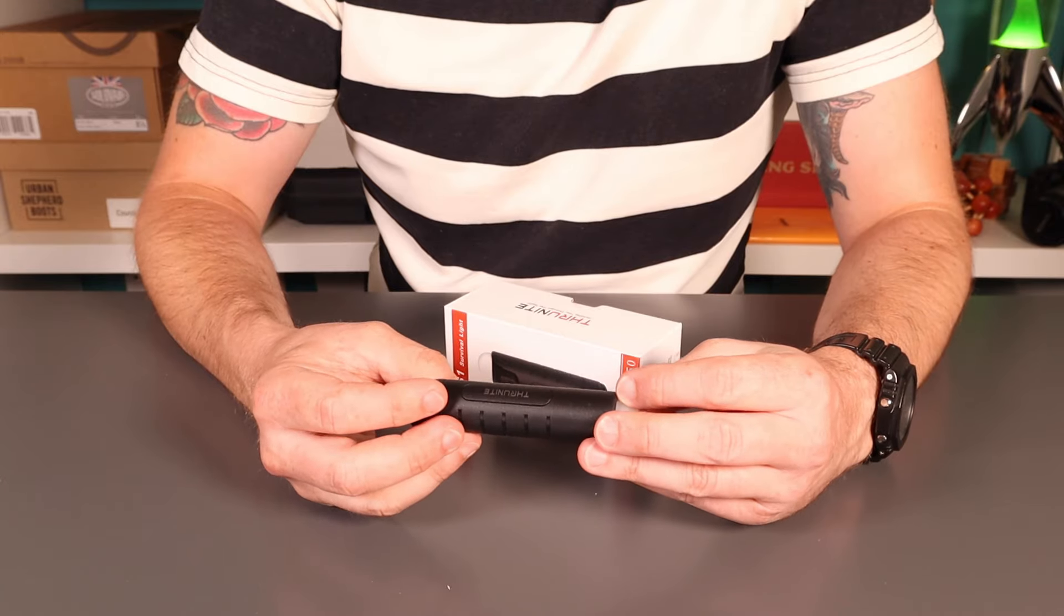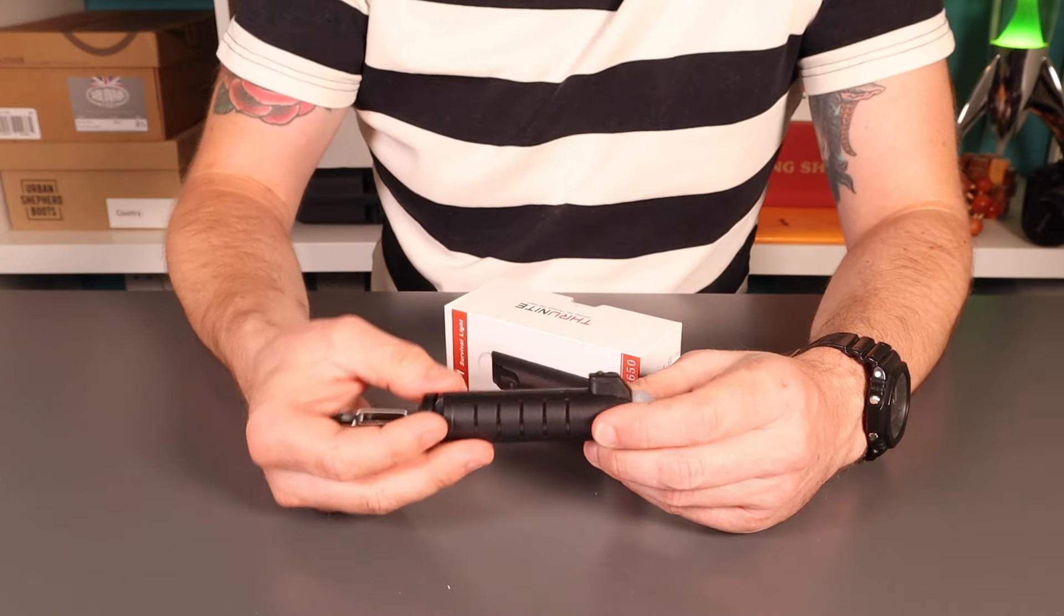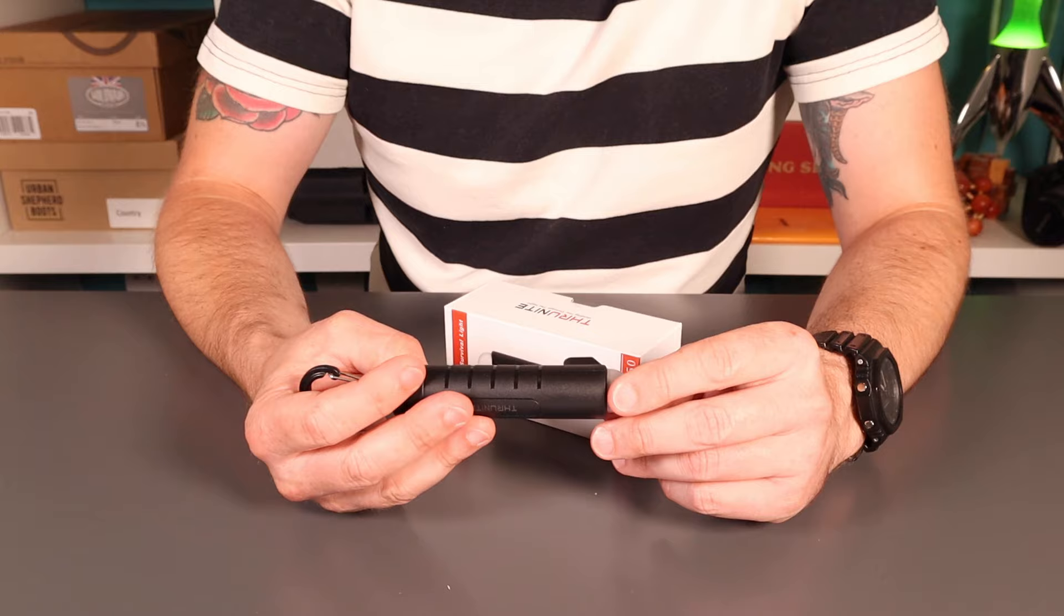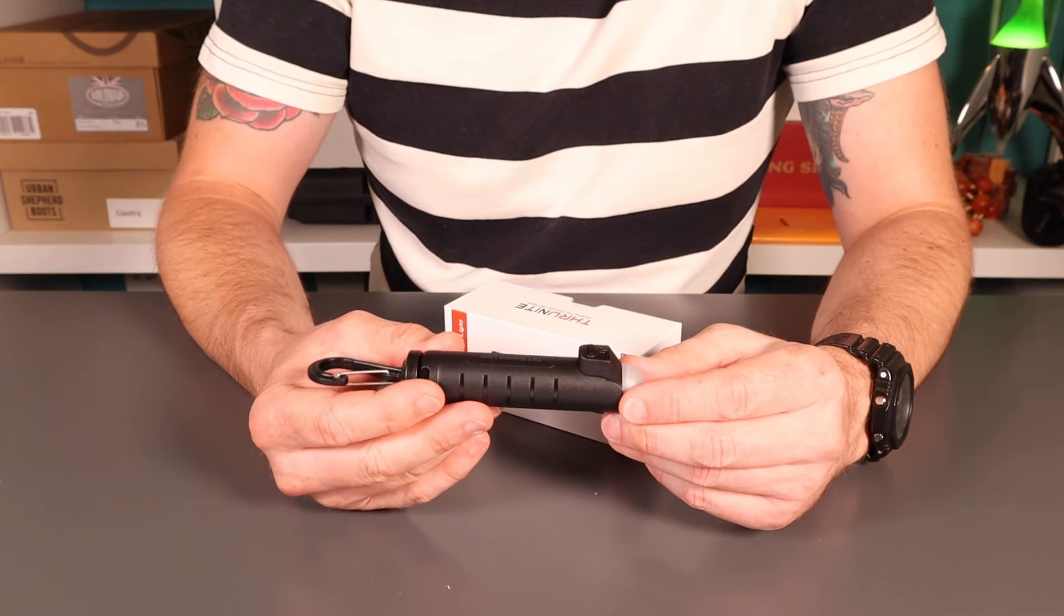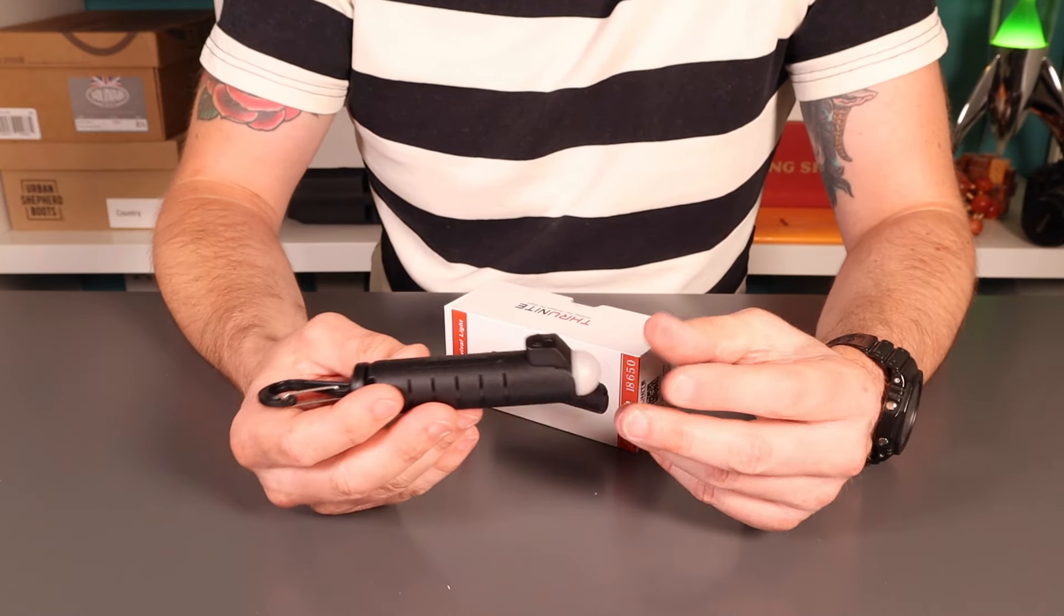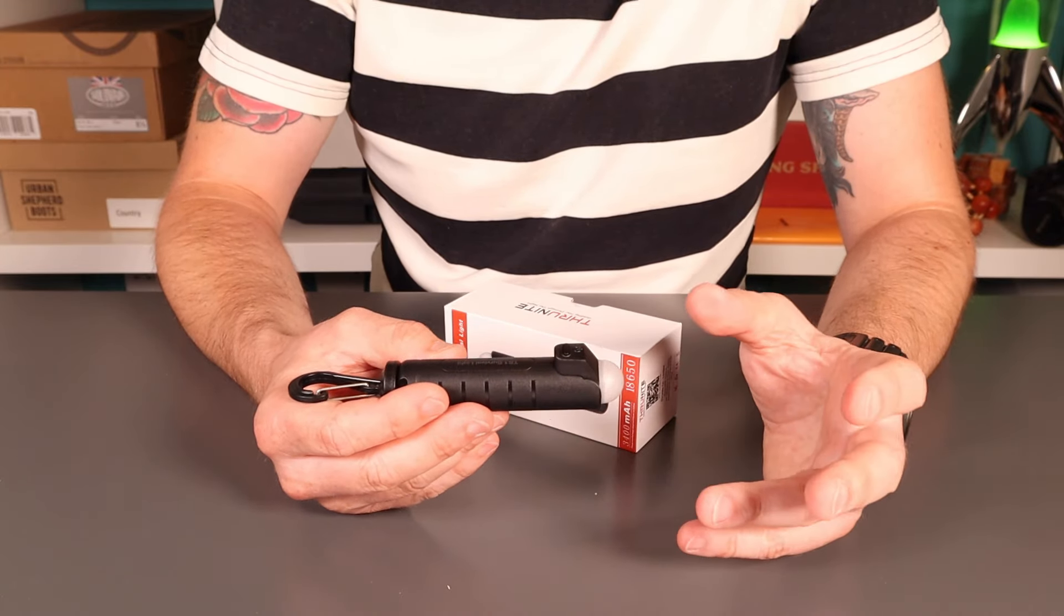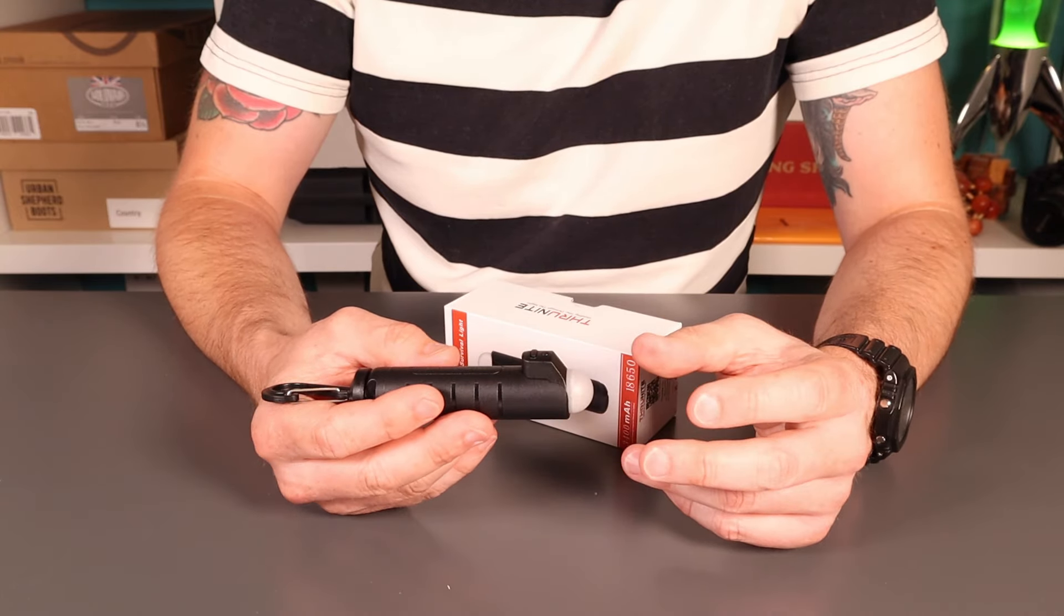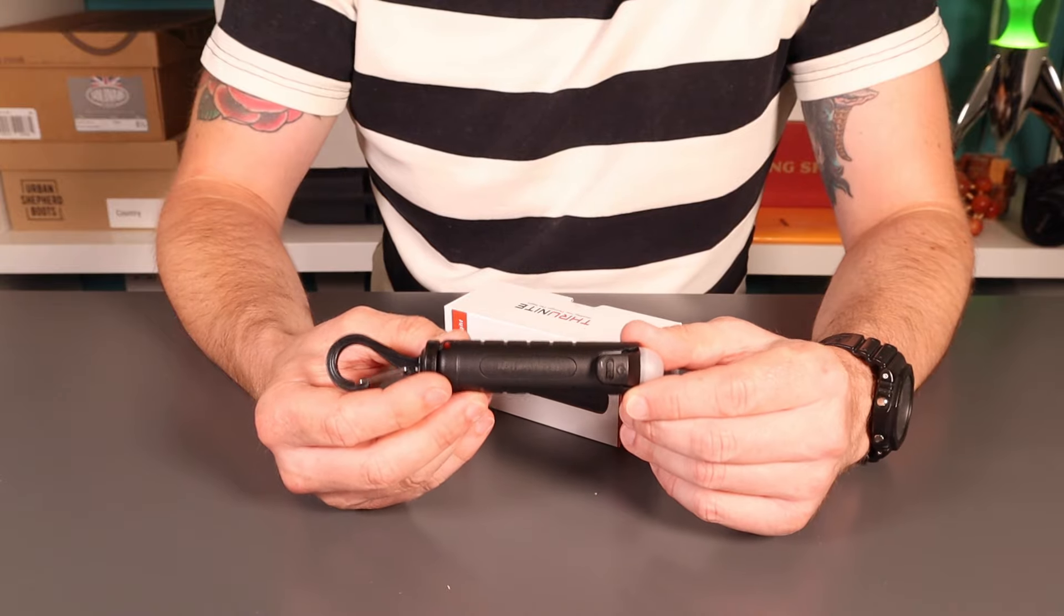We're looking at the Thrunite TS1 survival light. It's a simple lantern with opaque dome, 180 degrees illumination, and it's built around an 18650 cell which also functions as a power bank. Three settings from 400 lumens with times of 8 hours to 120 hours. Let's have a look and see what's in the box.